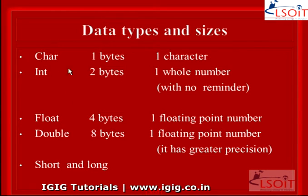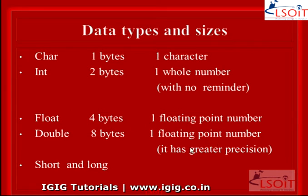Char has 1 byte storage. Int has 2 bytes storage. Float has 4 bytes storage. Double has 8 bytes storage. Char can store 1 printable character. Int can store a whole number with no remainder. Float can store 1 floating point number. Double can also store a floating point number, but with greater precision because it has 8 bytes of storage, while float has 4 bytes.